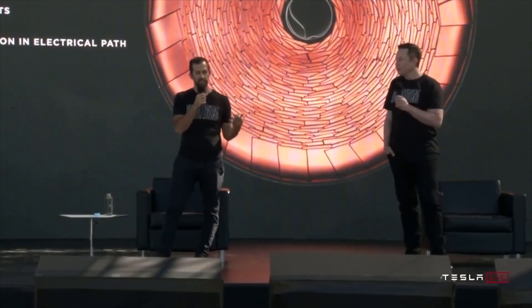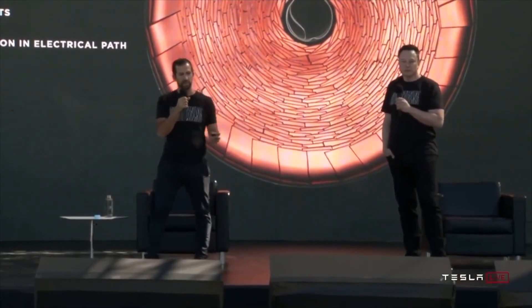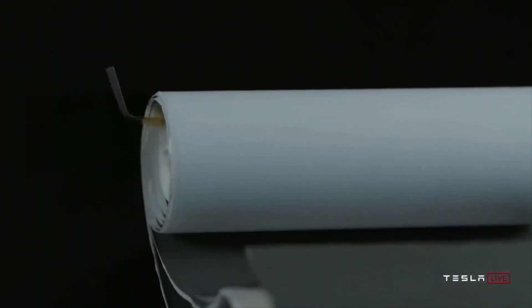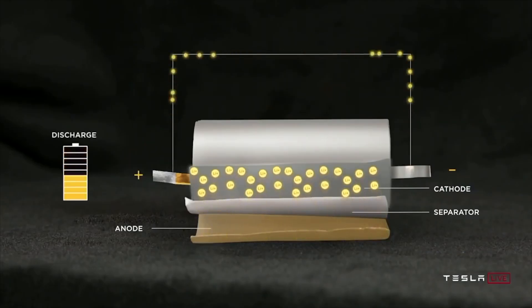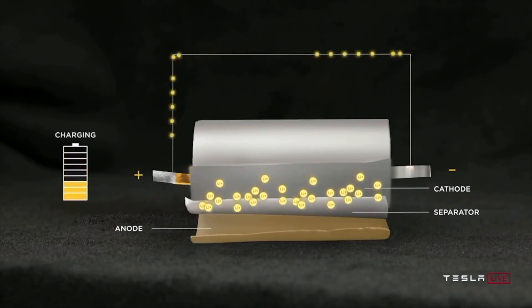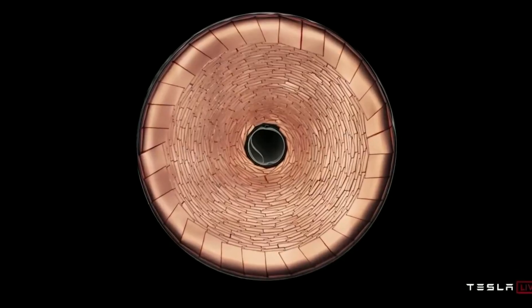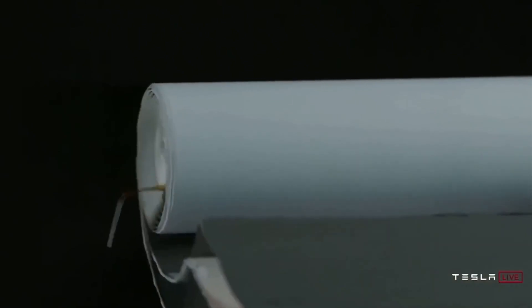While substantial progress has been made, we still have work ahead of us before we can achieve volume production. Internal crash testing of our structural pack architecture with a single-piece front casting has been successful. In short, Tesla managed to get some progress done, but they still have more work to do before achieving any volume production.